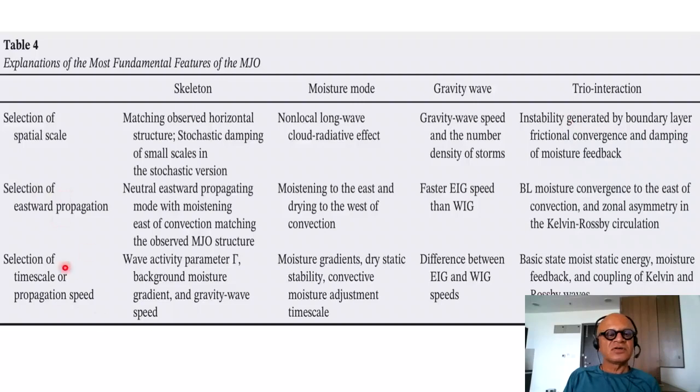And of course, there are other details here that I won't go into, but just want to give you an idea of what processes are looked at. In fact, how does the spatial scale selection happen? How does the eastward propagation happen given the Kelvin waves and Rossby waves which go westward? Whether it's mixed Rossby gravity wave, the role of the waves in making the convection move eastward. Selection of time scale or propagation speed, there are parameters here, there are moisture gradients here, there is difference in the eastward and westward inertial gravity waves here. And there is basic state, moist static energy and moisture feedbacks and coupling of Kelvin and Rossby waves here in the trio interaction.